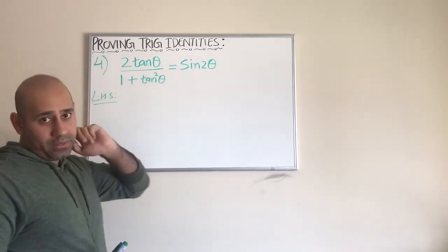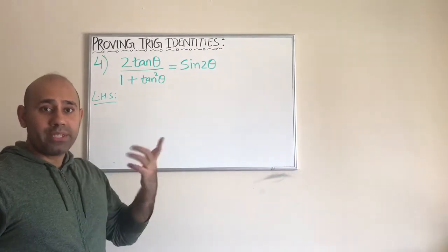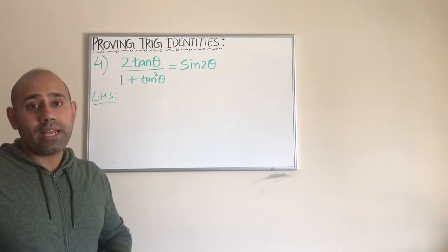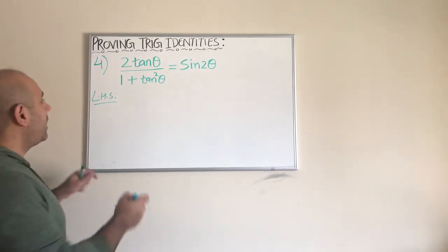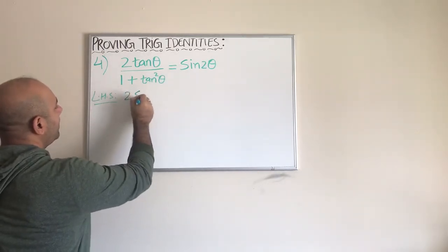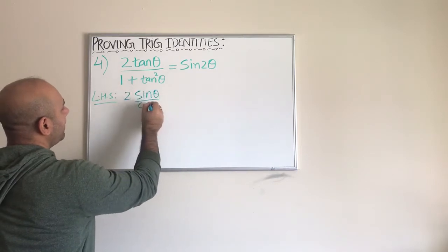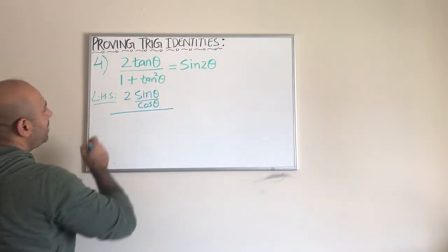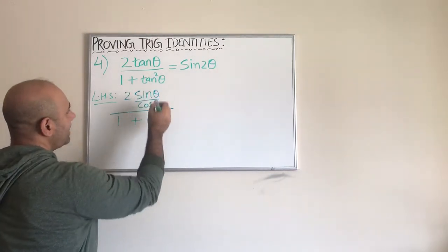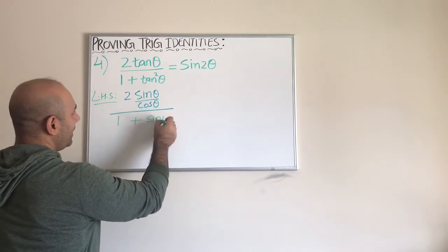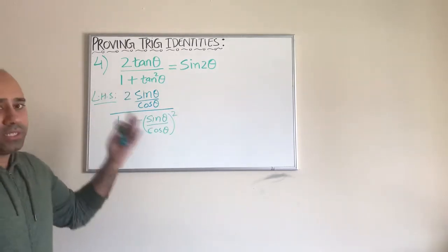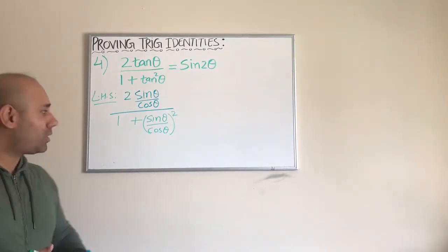For the left hand side, when we think of simplifying, we know tangent can be written as the ratio of sine over cosine. So we write tangent as sine over cosine. This gives us two times sine theta over cosine theta in the numerator. For the denominator, we have one plus tangent squared, so we write sine theta over cosine theta and then square it, because tangent theta is sine over cosine and we need to square that.